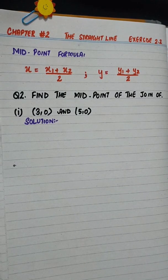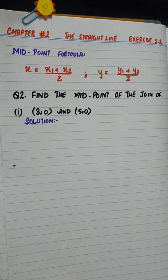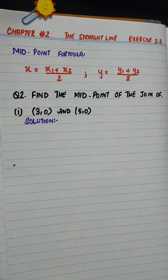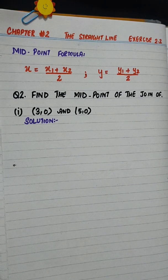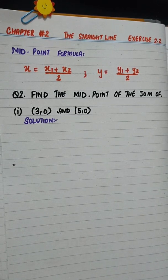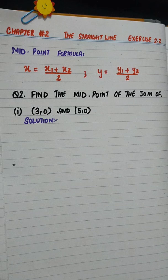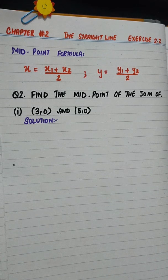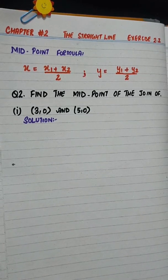Hello everyone, this is Rabia Aslam. In this video, we will start exercise 2.2, chapter number 2. Our today's topic is how to find a midpoint. Midpoint formula is that x is equal to x1 plus x2 divided by 2 and y is equal to y1 plus y2 divided by 2.